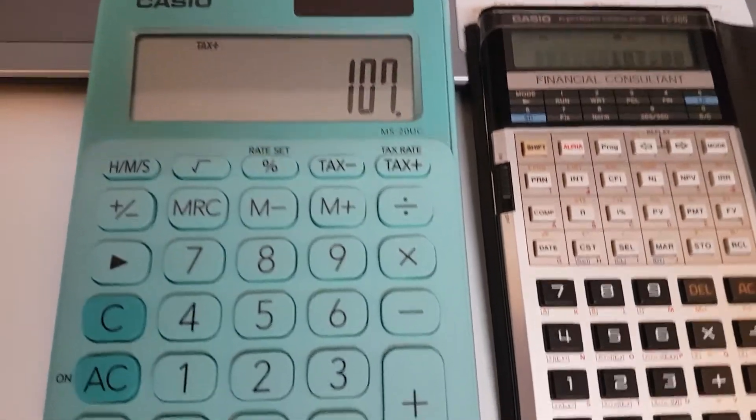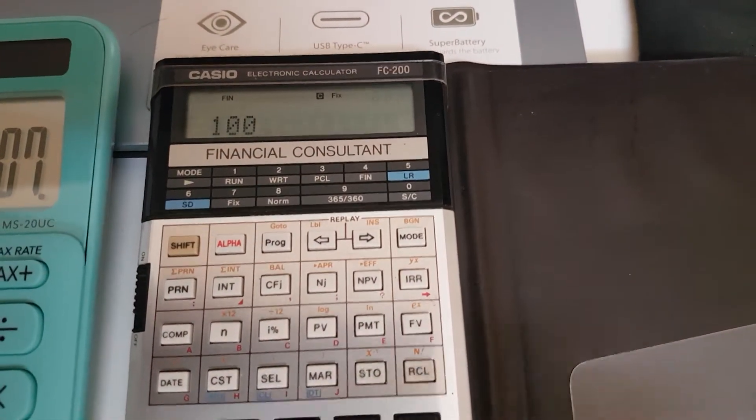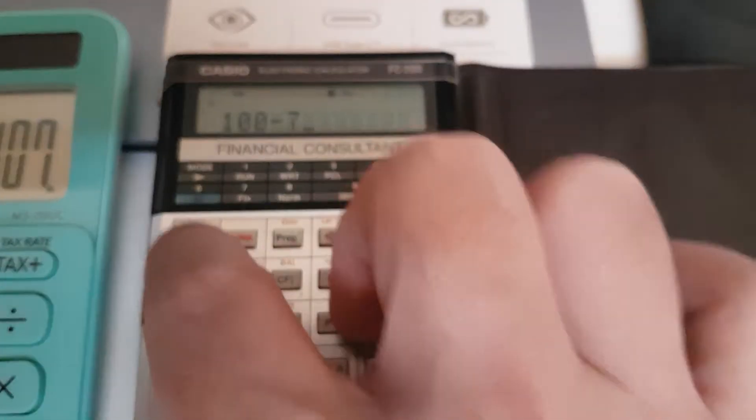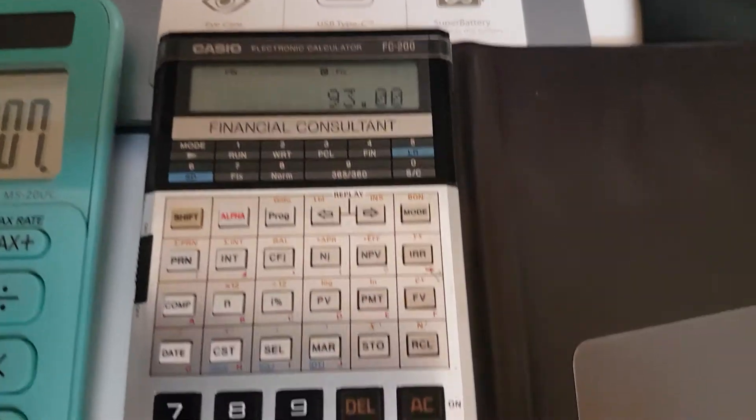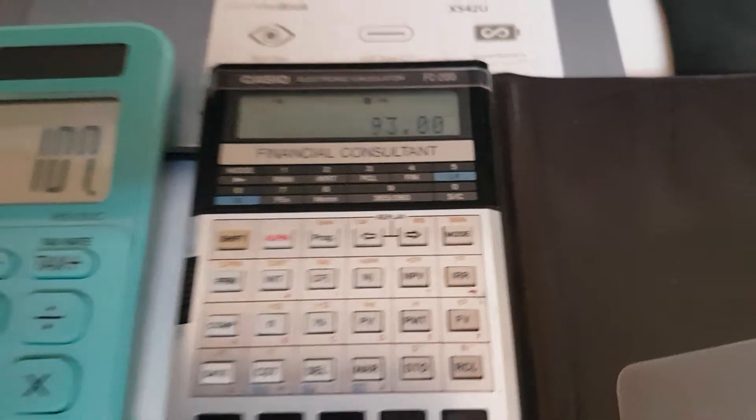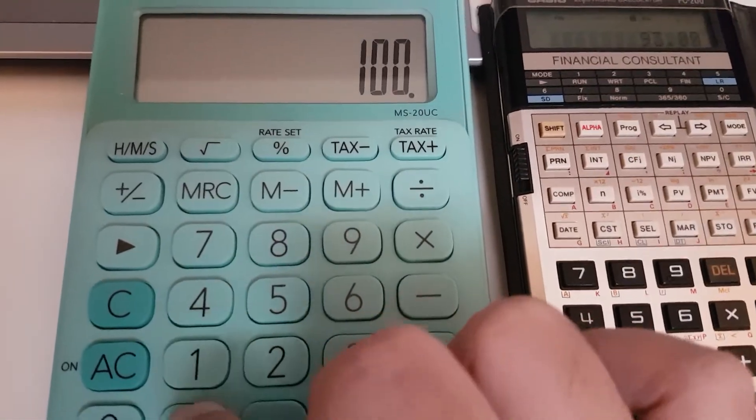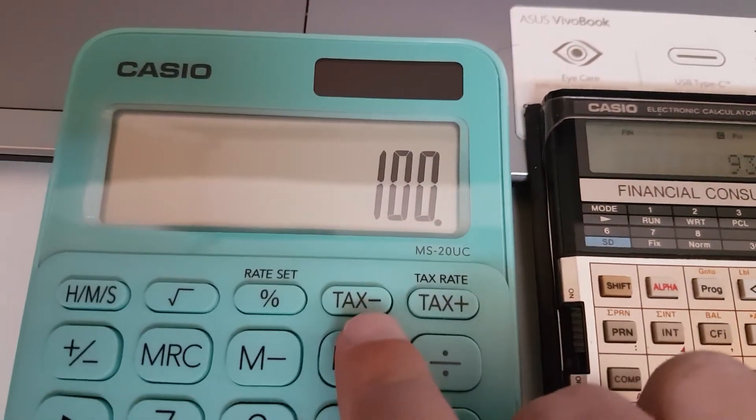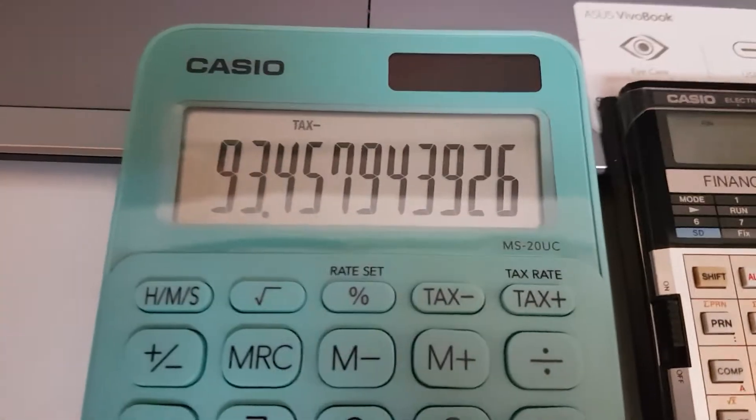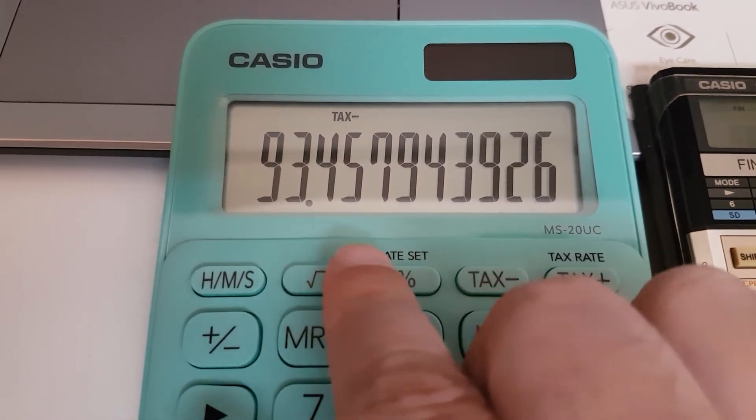And when you want to subtract 100 minus 7 percent, this one shows 93 and that's not the correct answer. Let's check it out on this calculator: 100 tax minus, minus 7 percent, and that's going to be 93 and 46 cents.